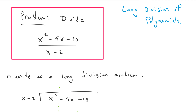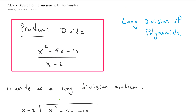They can give us this problem in a way that doesn't look like it's really a long division problem. For example, x squared minus 4x minus 10 divided by x minus 2. When you look at that, it doesn't really look like a long division problem. But when we try to factor the numerator, we can't factor the numerator. And when we look at the fact that the highest exponent in the top is bigger than the highest exponent in the bottom, we think yeah, we can use long division of polynomials.